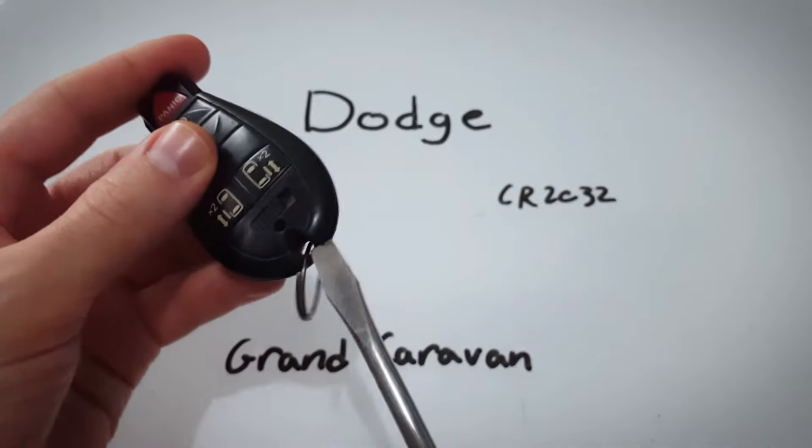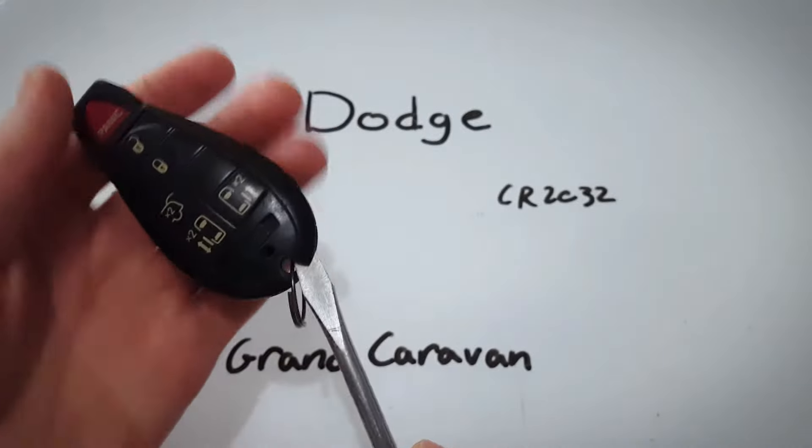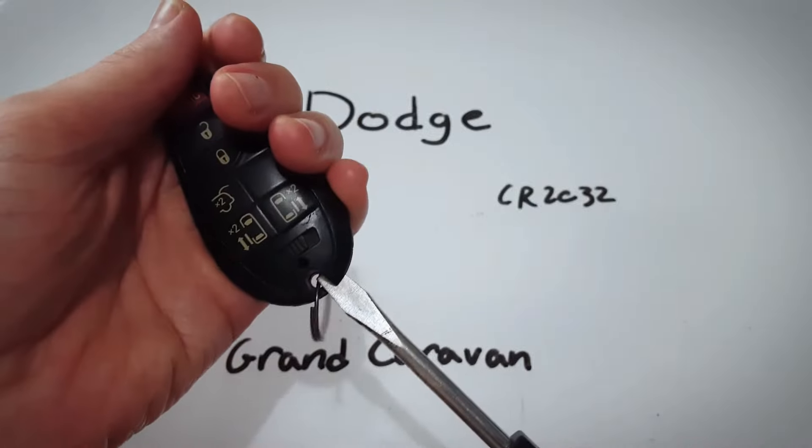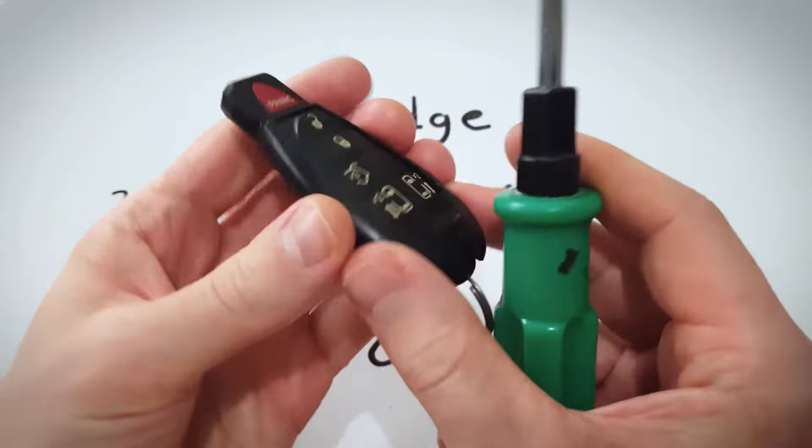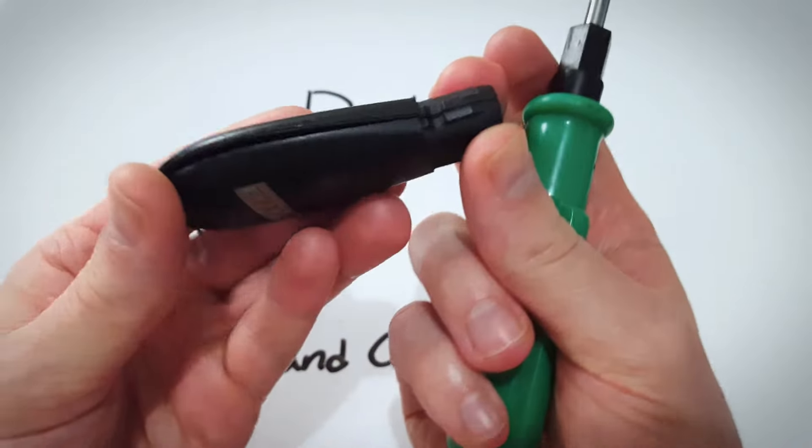Oops, you're just going to push in until it kind of sticks in place like that and then you can simply twist. Gently twist until you feel a little click and you can see now it's starting to come apart.